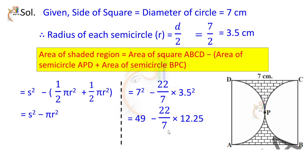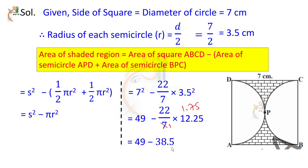Simplifying: 7 squared equals 49. Then 22 by 7 into 12.25 — converting 3.5 to 7 by 2 and squaring gives 49 by 4, which simplifies to 1.75 into 22 equals 38.5. So 49 minus 38.5 equals 10.5 square centimeters.